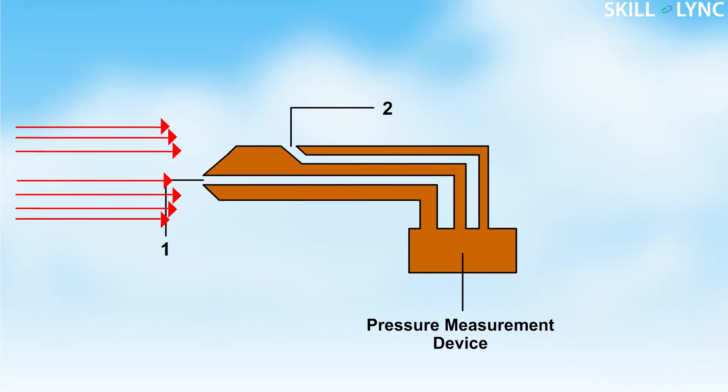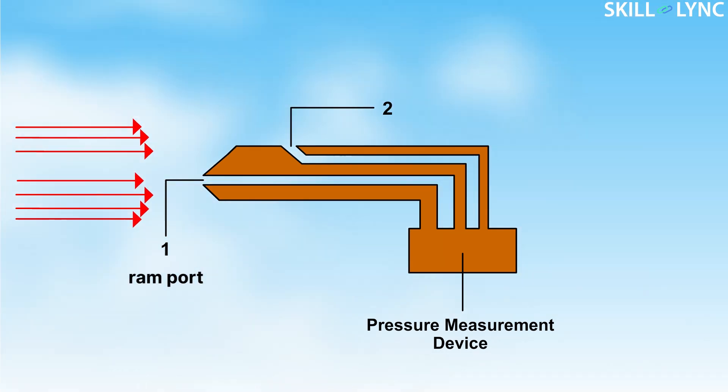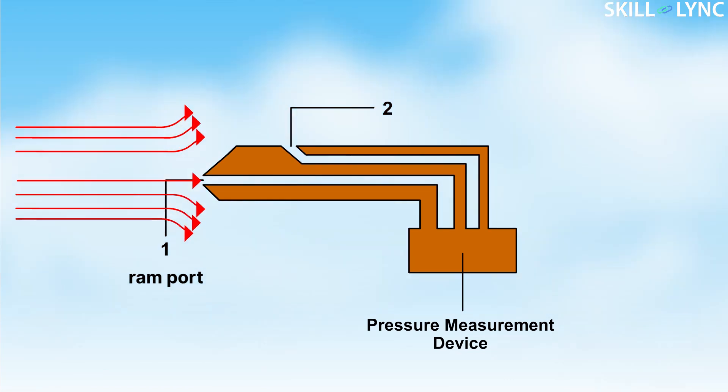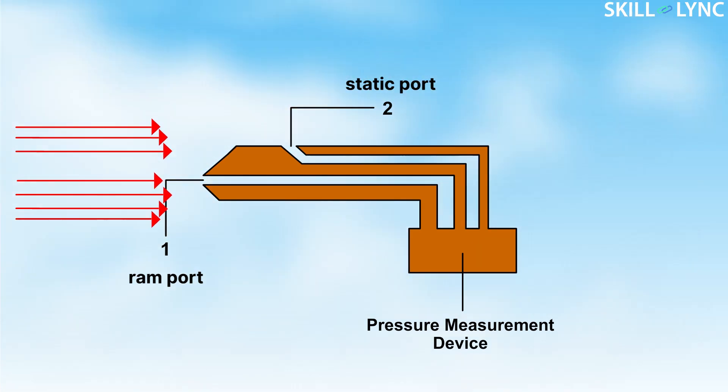The first hole is generally used to measure the airspeed by taking note of the air ram. It's called the ram port. Hole number two is used to measure the altitude by measuring the static pressure of the air. It is called the static port.